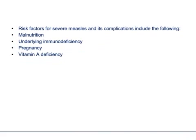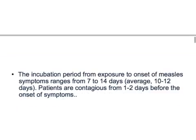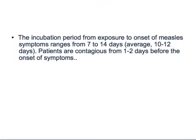Risk factors for severe measles and its complications are very important. These include malnutrition, underlying immunodeficiency, pregnancy, and vitamin A deficiency. Because vitamin A deficiency is associated with this disease, we administer vitamin A to patients with measles.